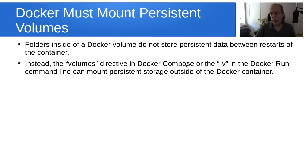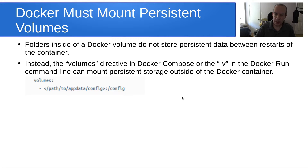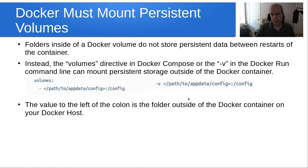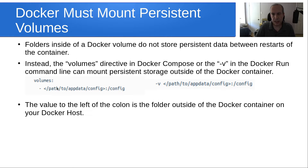The volumes directive in Docker Compose, or the -v flag in the Docker run command line, can mount persistent storage outside of the Docker container itself. The value to the left of the colon is the folder outside the Docker container on your Docker host — documentation will often show something like /path/to/app/data, indicating you should change this path to wherever you want to store data on your host. Inside the container, that location is simply called /config.